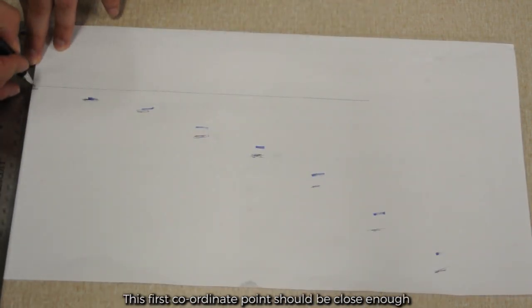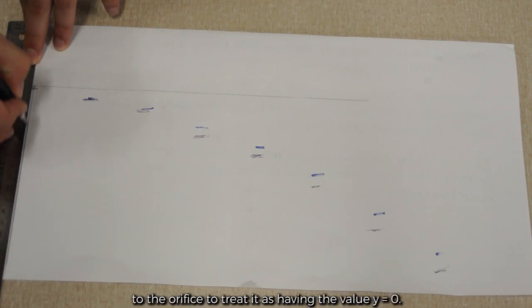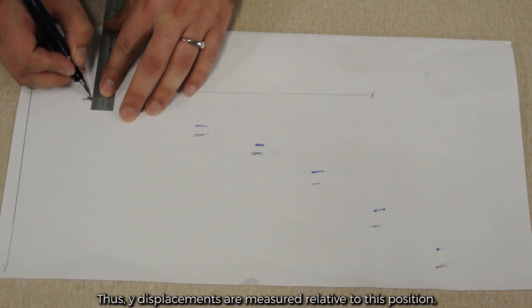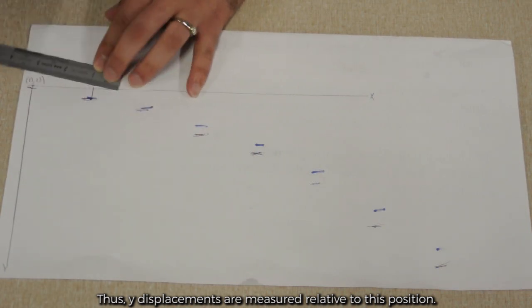This first coordinate point should be close enough to the orifice to treat it as having the value y equals 0, thus y displacements are measured relative to this position.